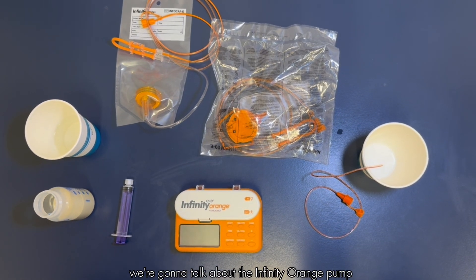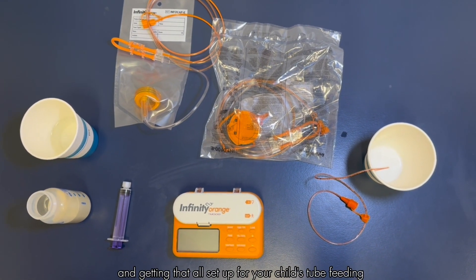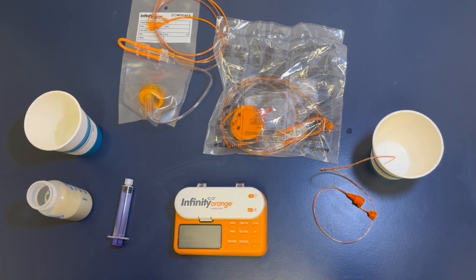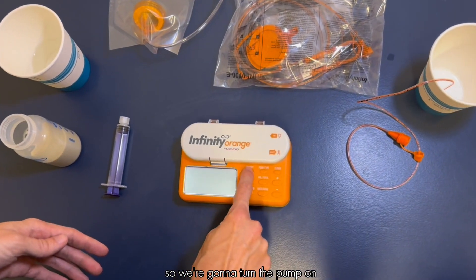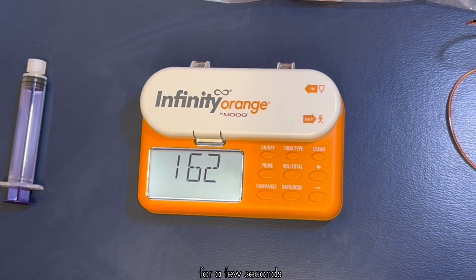We're going to talk about the Infinity Orange pump and getting that all set up for your child's tube feeding. The first thing I like to do is program the settings. We're going to turn the pump on by pressing and holding the on-off button for a few seconds.